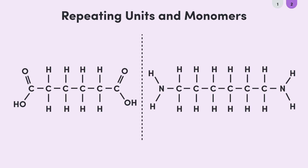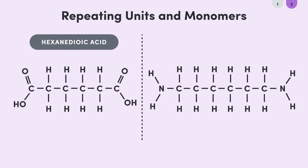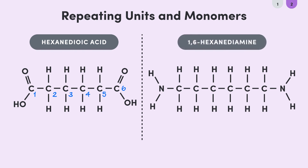Here we have hexanedioic acid, a dicarboxylic acid with six carbons in the longest carbon chain. Then over here, we have 1,6-hexanediamine. It's a diamine which, again, has six carbons and amine groups on carbons number one and six.